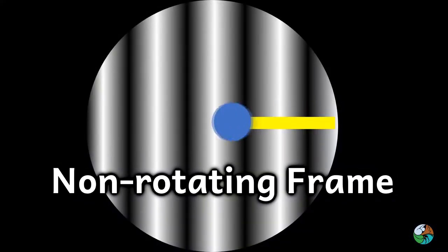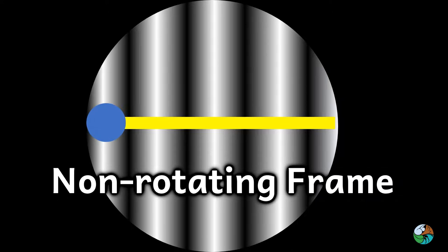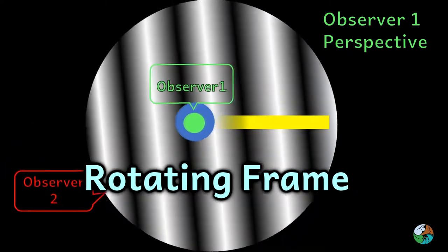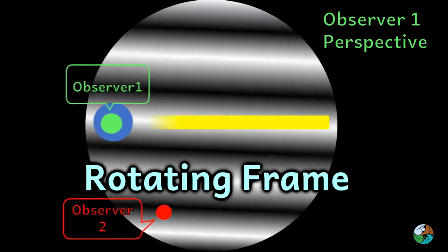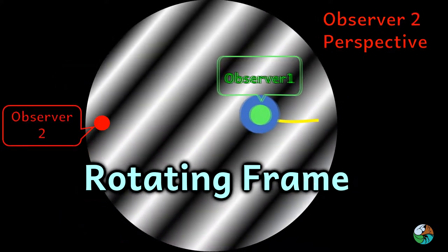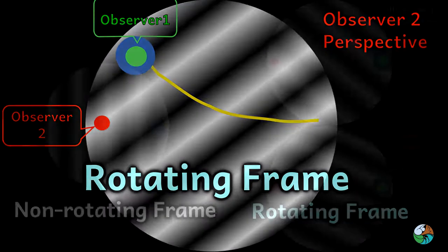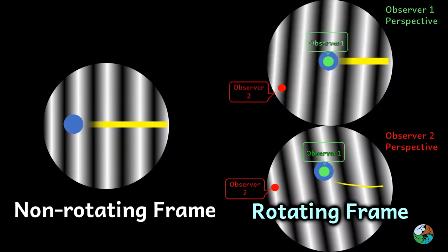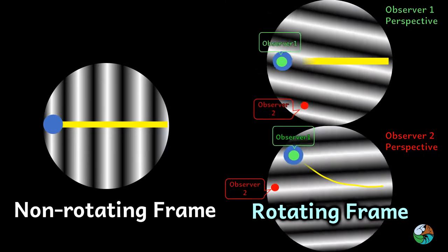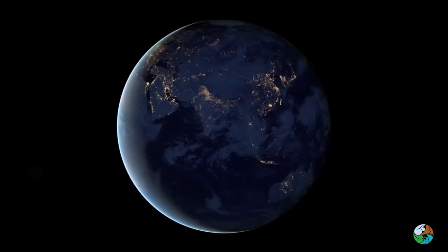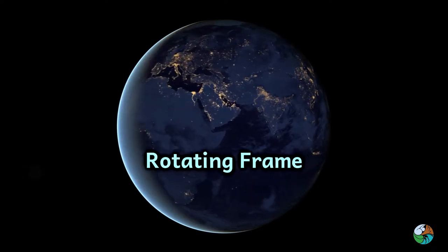A non-rotating frame is not rotating with respect to an observer who is at rest. A rotating frame is rotating with a constant angular velocity and the observer follows this rotation. We are all standing on a rotating frame, which is the Earth.